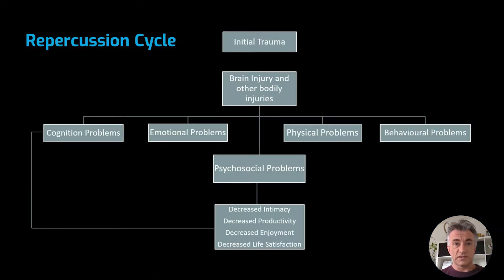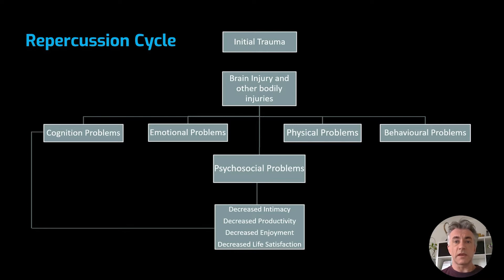The general repercussion cycle shows what can typically happen to a person after a brain injury. The cycle starts with a trauma, which leads to a variety of physical, cognitive, emotional, and behavioral deficits. These problems interact and can combine to create psychosocial problems, which can lead to all sorts of new ones. Accordingly, brain-injured patients experience difficulty performing activities of daily living and self-care.